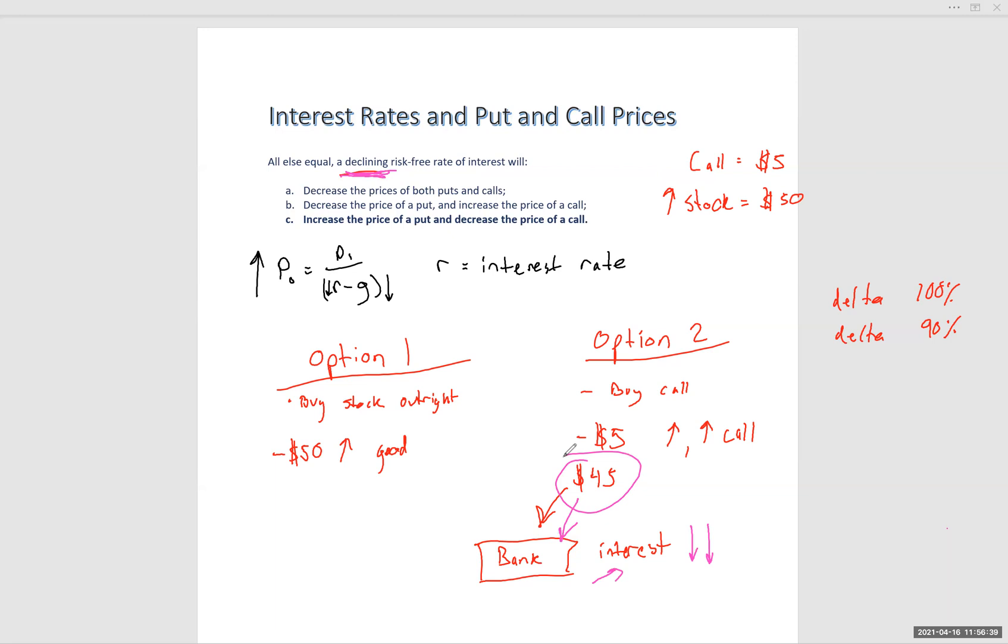If interest rates were going up, on the other hand. So let's say interest rates are climbing. Well, your $45 is going to start earning more and more in interest, making this look like a better choice. Buying a call as opposed to buying the stock outright.